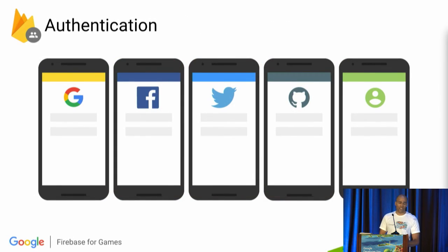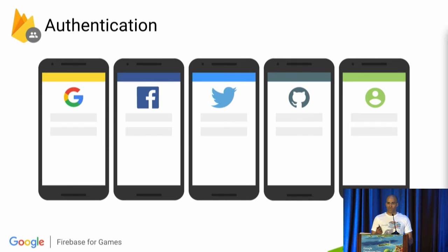We have an authentication API that allows you to authenticate with multiple identity providers. Users can sign in anonymously and then later upgrade to an identity provider out of the box, or they can use an anonymous account.